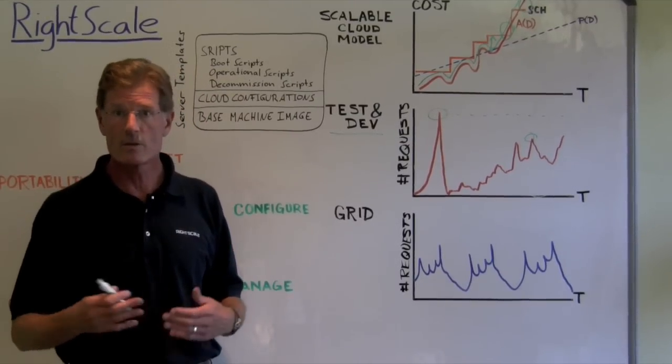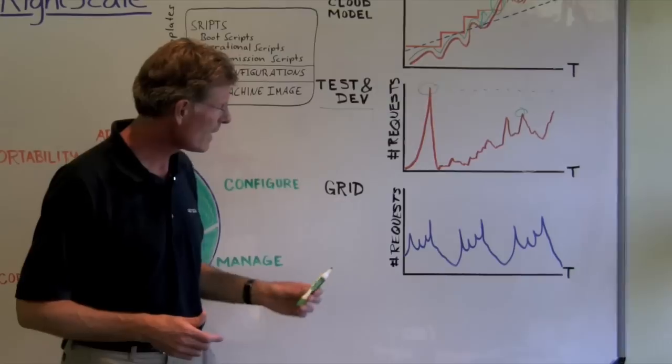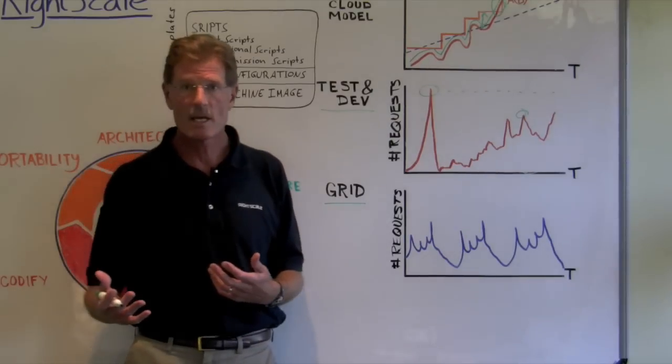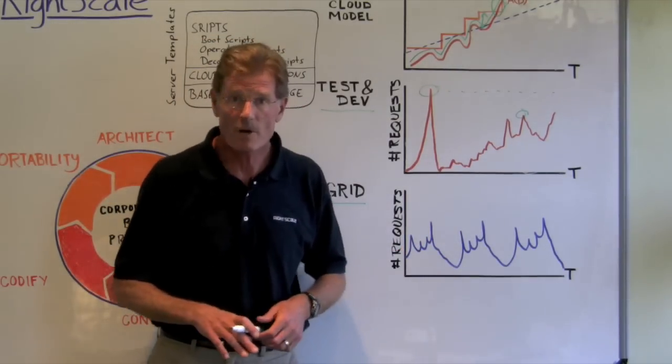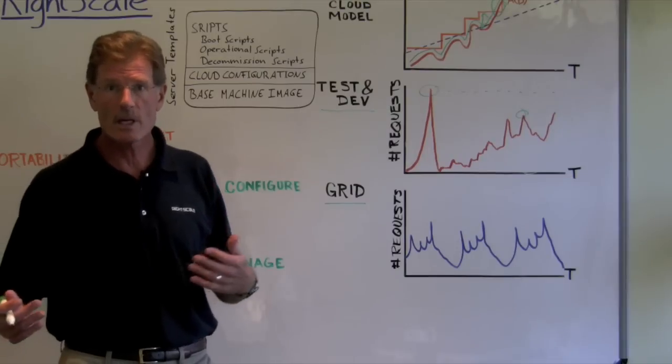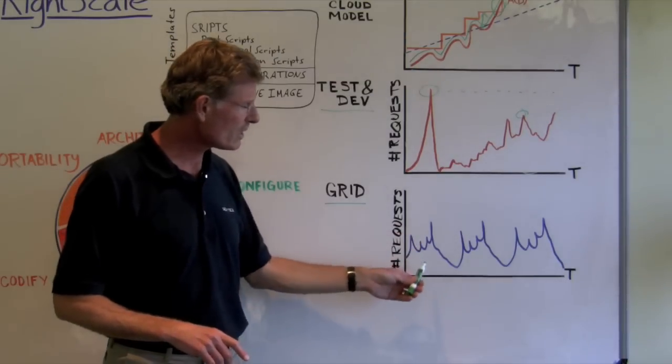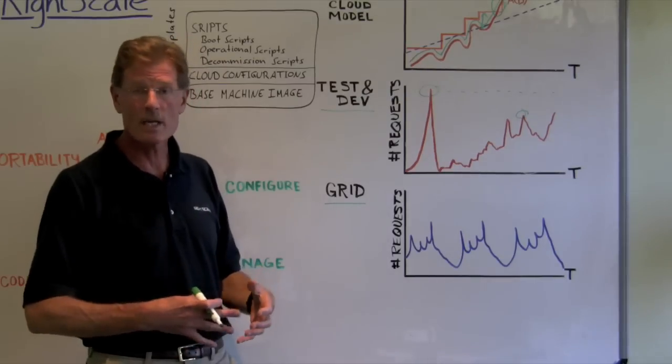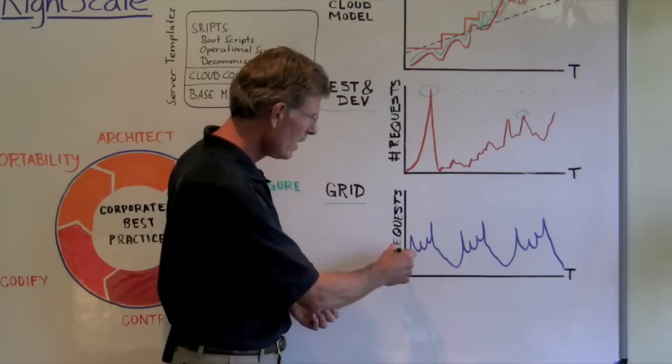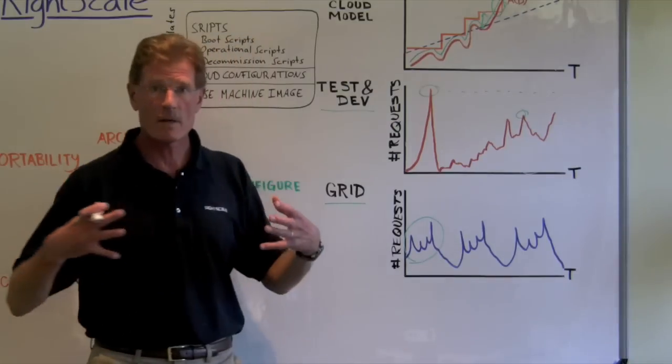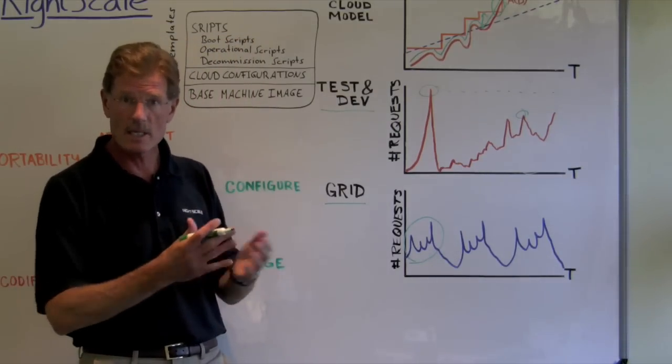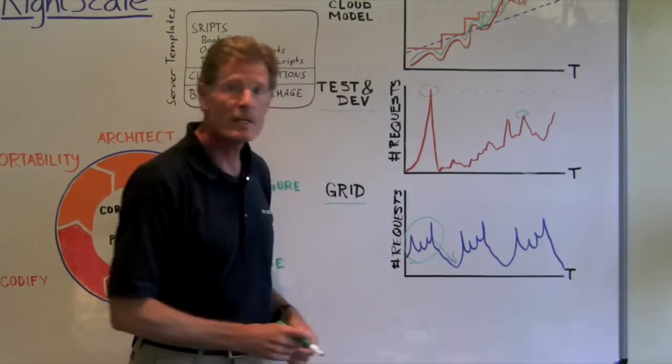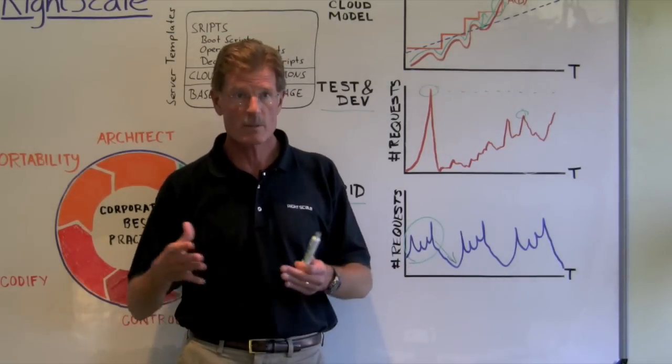The final example I wanted to cover has to do with grid or batch processing applications. And this is exemplified by our customer TC3 Health. TC3 Health is a company that analyzes health insurance claim form submissions to find which ones are fraudulent, which ones might be improper and should not be processed and paid. And so they get batches of health forms in a somewhat predictable pattern. They don't know exactly when they're coming from day to day, but they'll get a batch of sometimes many millions of health forms.